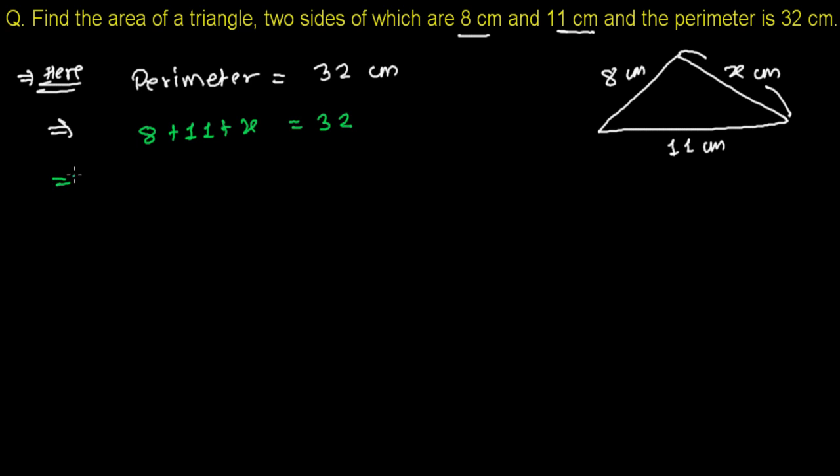8 plus 11, that's going to be 19 plus x is 32. Therefore, the third side x is going to be 32 minus 19, and that equals 13 cm. So we got the third side, that is 13 cm.